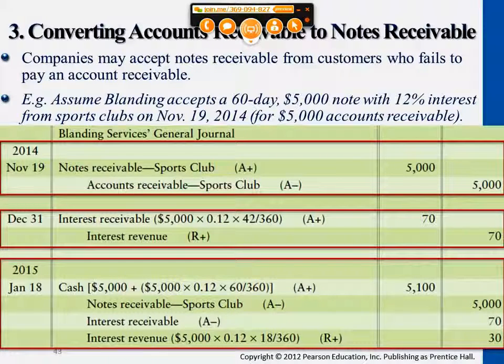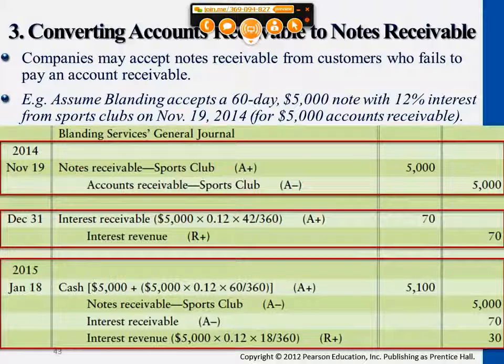The third entry — just like the others — when the note matures and we collect it, the amount will be $5,000 plus the total amount of interest.